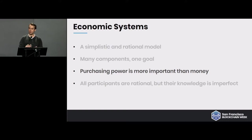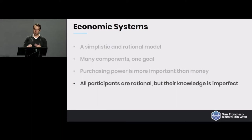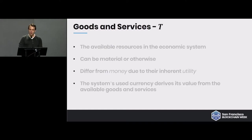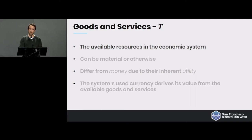We regard all participants — which we call agents — as rational, but we also assume their knowledge is imperfect. If you assume perfect knowledge there isn't much to say. Basically, a coin restoration scheme corrects misinformation in the system, where one player might know 10 coins are lost but others don't. Goods and services are the available resources in the economic system — similar to GDP — that participants are willing to trade against the coin. Goods and services can be material or otherwise: I might trade my car or hours of work for Bitcoin.